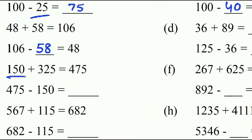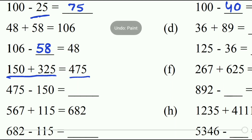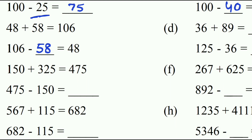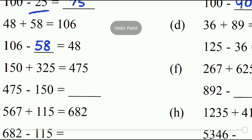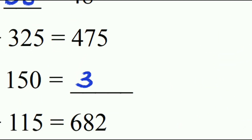Next: 150 plus 325 — two addends given. The total sum is 475. When we subtract one addend from the total sum, the remaining addend is 325.